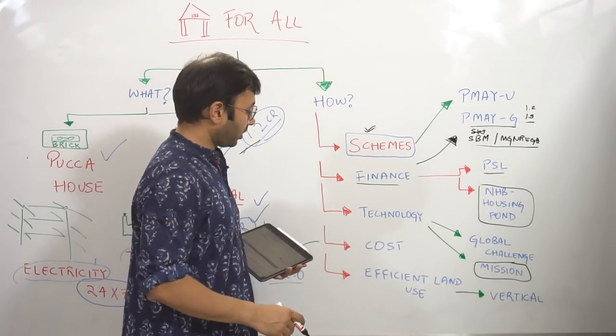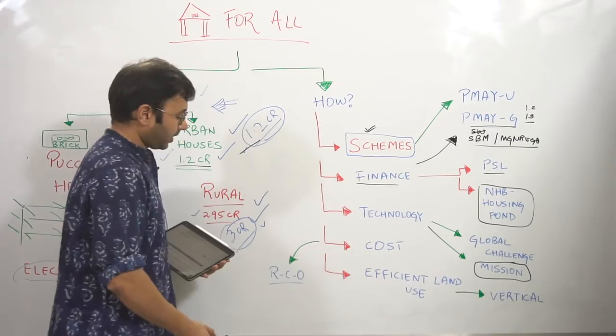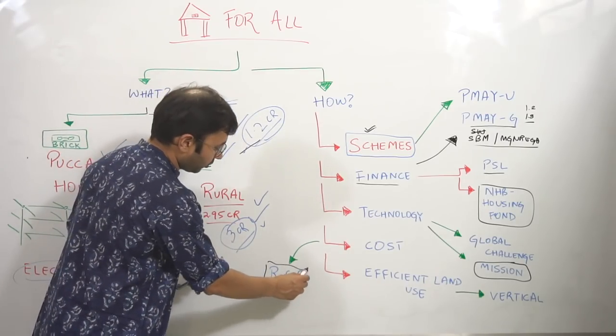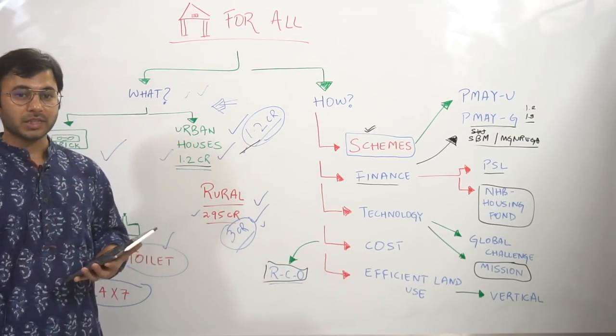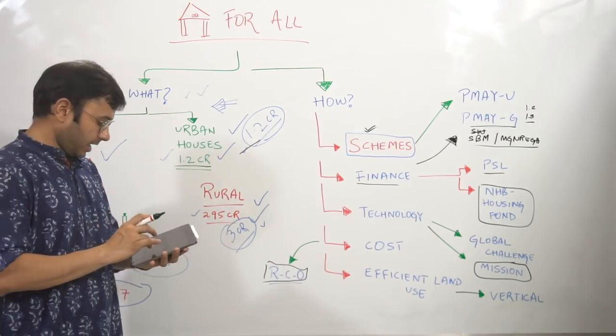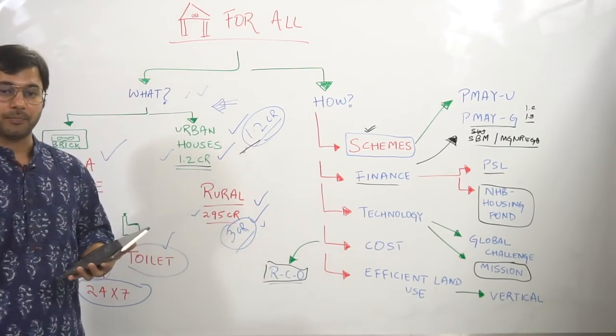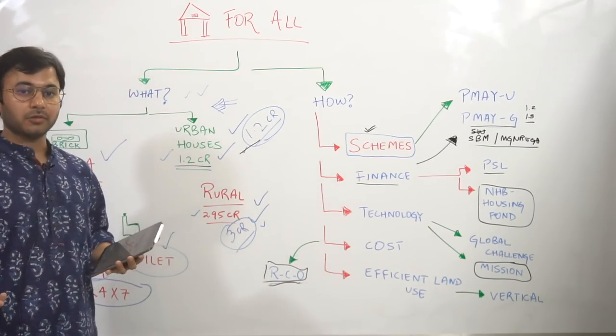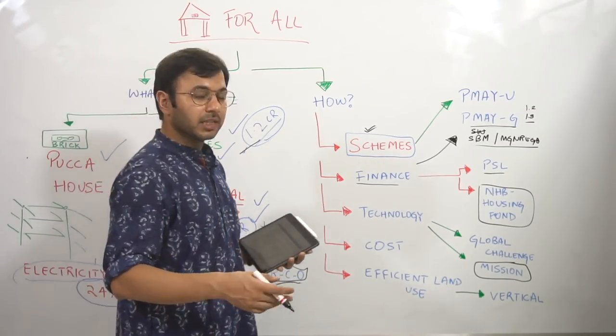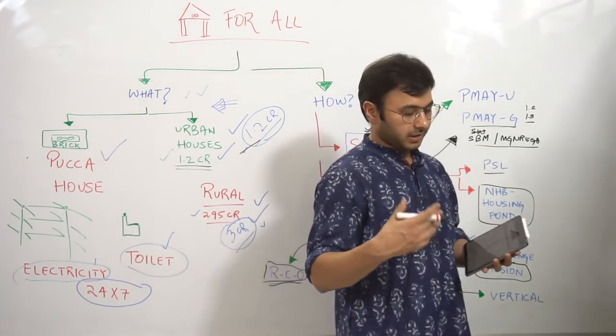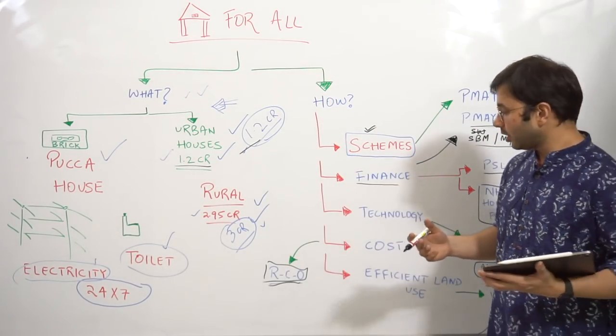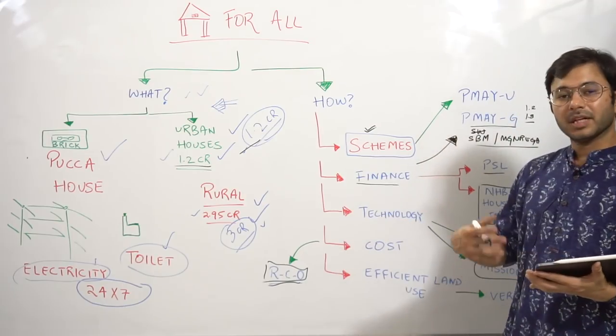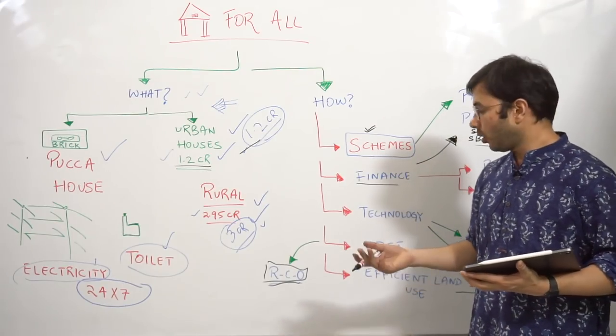Then next is cost part. In cost part, you need to remember this acronym, which is RCO. What does it mean? It means rental come ownership housing. What this means is that the banks, while they are providing funds or if a person is renting a house, let's say low cost houses have been created and people have started renting those houses.